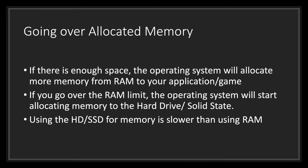If there is enough space, the operating system will allocate more memory from RAM to your application if it uses more than was previously assigned. However, if you go over the RAM limit, the operating system will start allocating memory from the hard drive or solid state drive. Note that using a hard drive or SSD for memory is slower than using RAM.